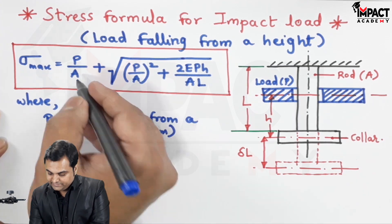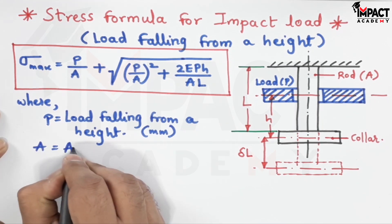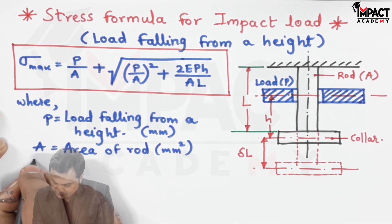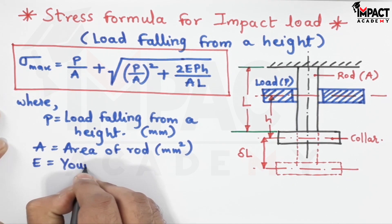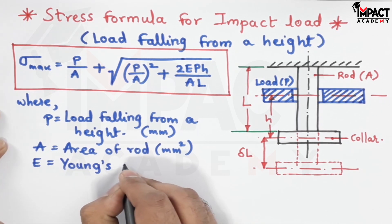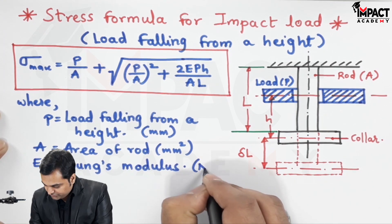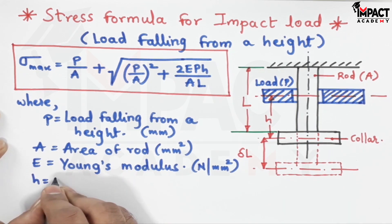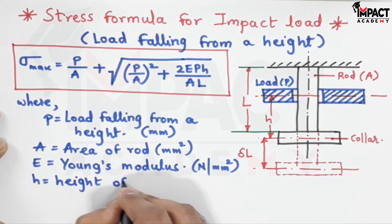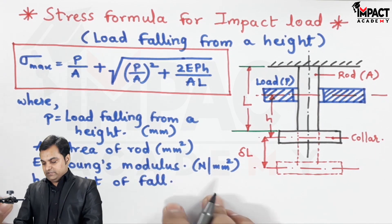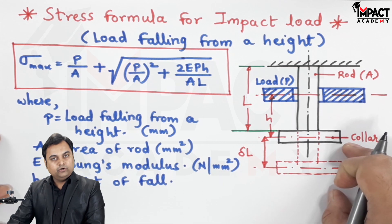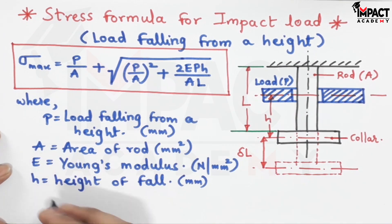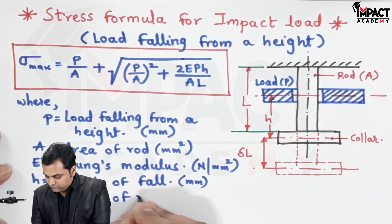I'll quickly write the terms here. P is the load falling from a height. Capital A is the area of the rod in mm squared. Capital E is Young's modulus or modulus of elasticity for the rod material, with units of newton per mm squared. H is the height of fall, that is the height from which the load is falling onto the collar. And L is the length of the rod.